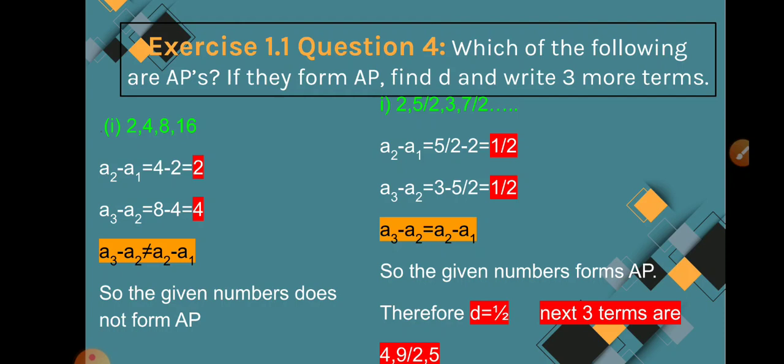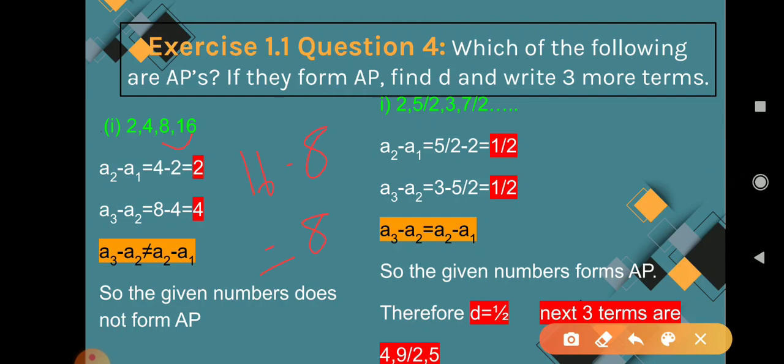For the first problem, 2, 4, 8, 16: A2 minus A1 = 4 minus 2 = 2. A3 minus A2 = 8 minus 4 = 4. A4 minus A3 = 16 minus 8 = 8. In each case we are getting different D values, so A3 minus A2 is not equal to A2 minus A1. The given numbers do not form an AP. If common differences are the same, it forms an AP; if they are different, it does not form an AP.